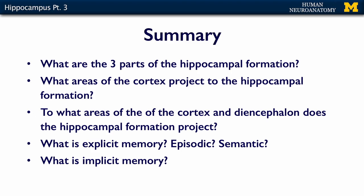What do I want you to take away from this lecture on the hippocampal formation? Remember what the three parts of the hippocampal formation are — when we say hippocampus, we're really talking about the hippocampal formation. What are those three subdivisions? What areas of the cortex project to the hippocampal formation? To what areas of the cortex and diencephalon does the hippocampal formation project? What is an explicit memory? What is the difference between episodic and semantic? And what is an implicit memory? If you understand all of these concepts, then you're ready for the assessment.